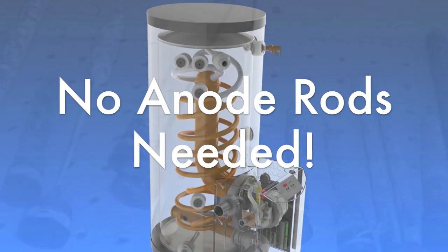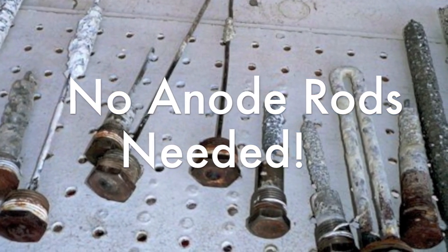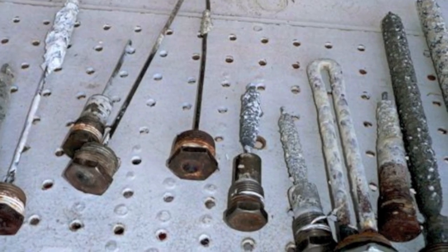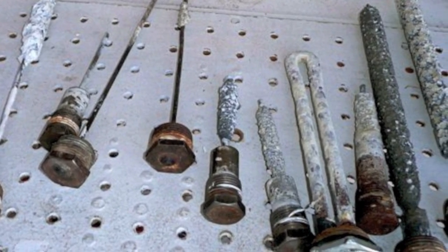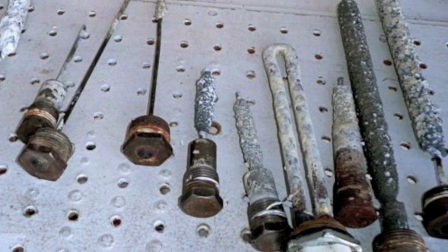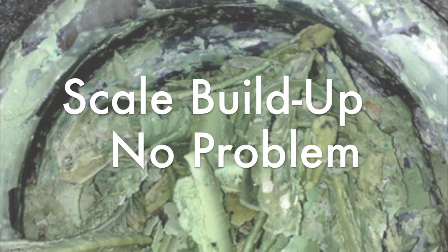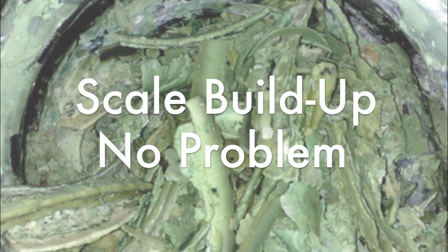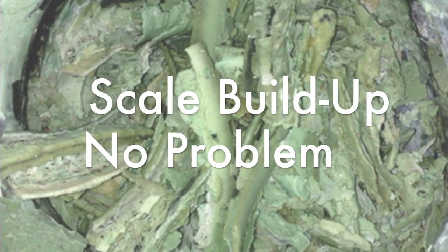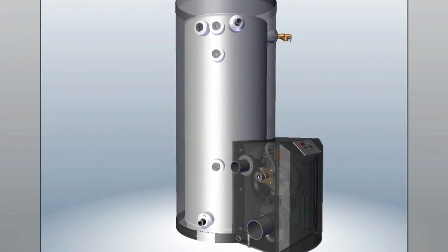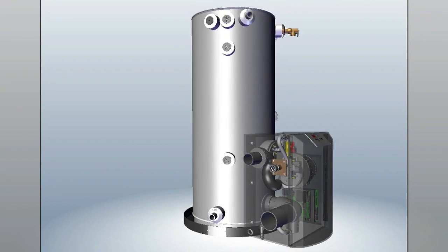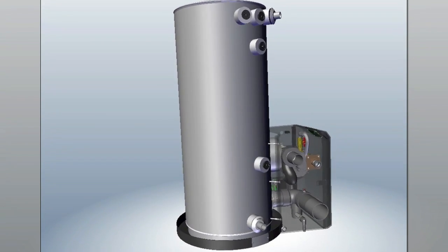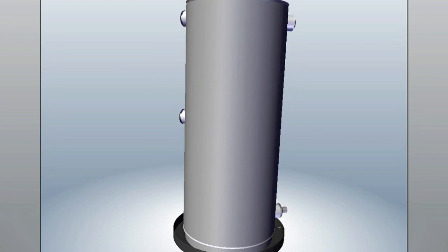In addition, the Phoenix does not require anode rods due to its use of 316L stainless steel for all tank construction. Anodes are required as sacrificial rods in all glass-line carbon steel tanks. Their job is to allow scale buildup, which is defined as a flaky oxidized mineral that forms on metal, to build and devour the magnesium-based anode rod instead of the carbon steel tank, which has only 12 ml of sprayed-on porcelain lining.